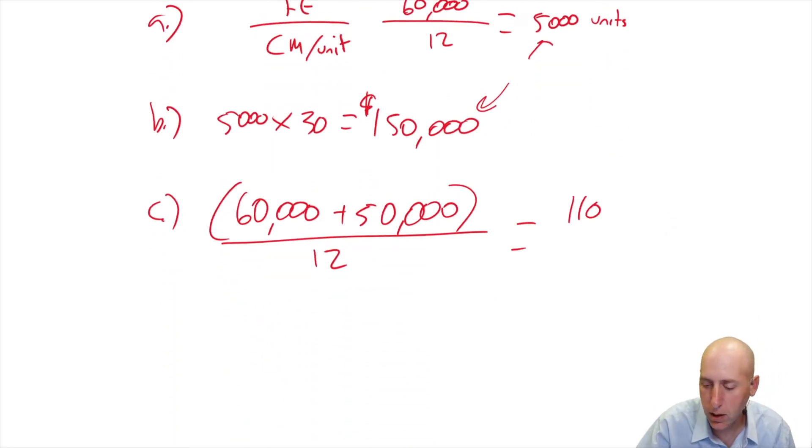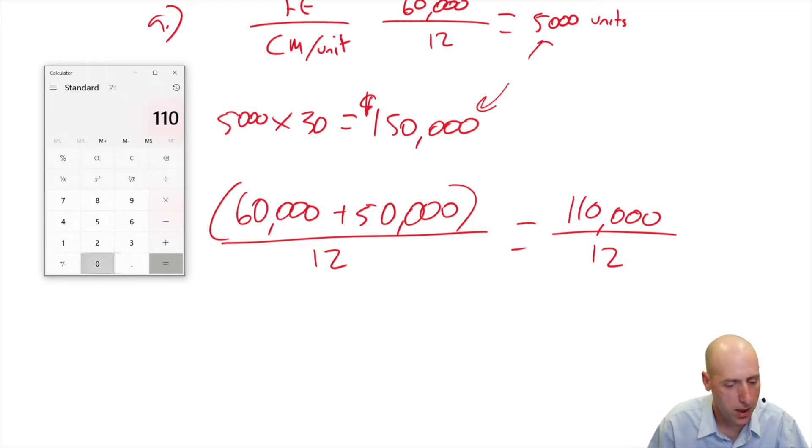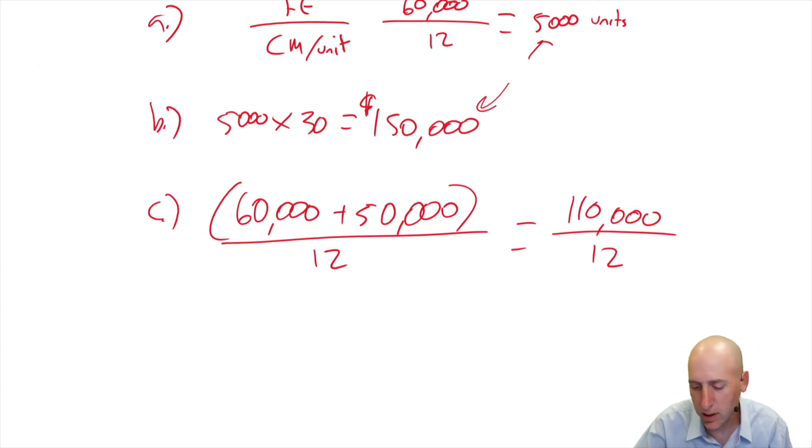So the numerator here, $110,000. The denominator remains $12. I need my calculator back to do this one. $110,000 divided by $12 gives us 9,166.666. Now again, this is a guesstimate, right? Our fixed expenses are not ever going to be exactly $60,000. This is just our best guess. So I know when I sell 9,167 bow ties, we won't sell a decimal number of bow ties. That's how many bow ties I need, not only to break even, but to turn a profit of $50,000.